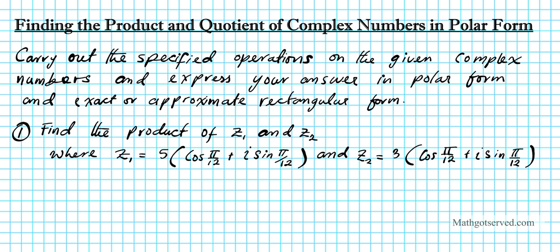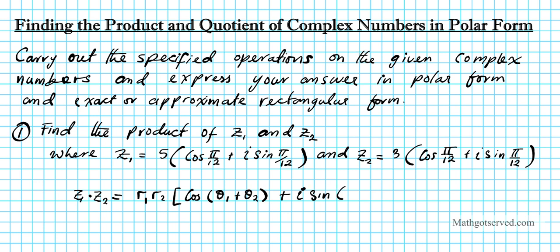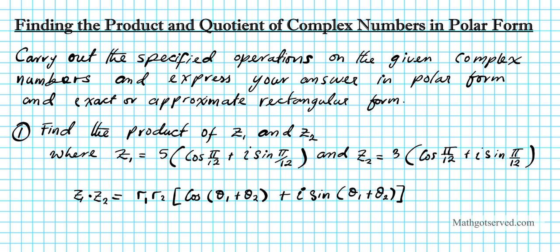So let's find the product. What is the formula for the product of two complex numbers? So z1 times z2 can be given by r1 times r2 times the cosine of the sum of the angles beta1 plus beta2, plus i sine of the sum of the same angles, beta1 plus beta2. That's the formula for the product of two complex numbers in polar form.